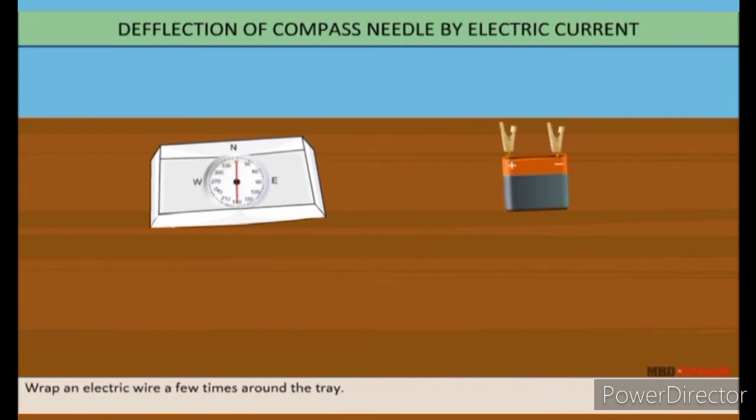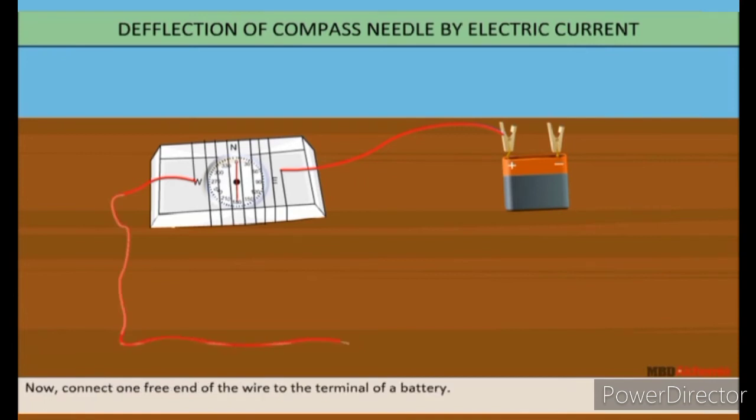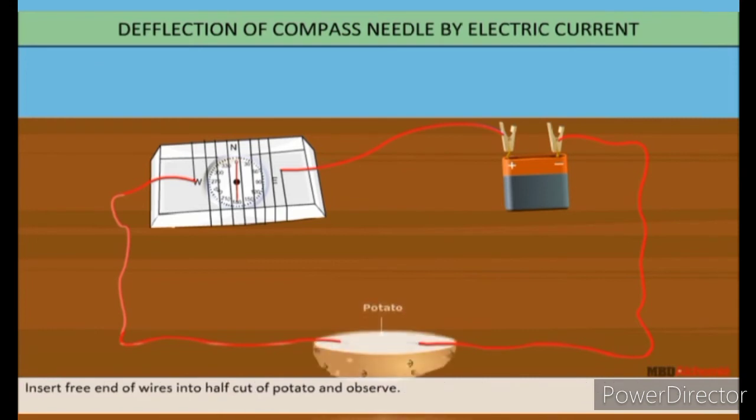Take the tray from inside a discarded matchbox. Wrap an electric wire a few times around the tray. Place a small compass needle inside it. Now, connect one free end of the wire to the terminal of a battery. Leave the other end free. Take another piece of wire and connect it to the other terminal of the battery. Insert free end of wires into half-cut of potato and observe.